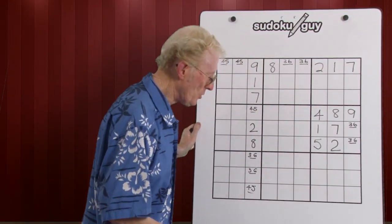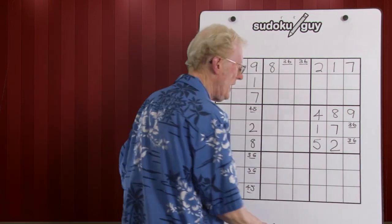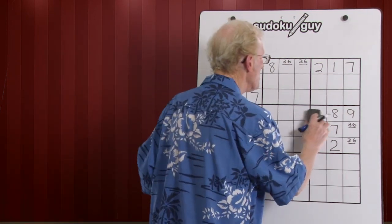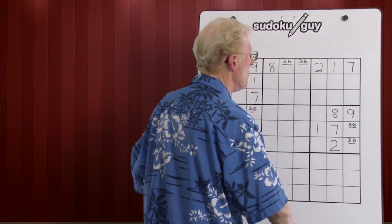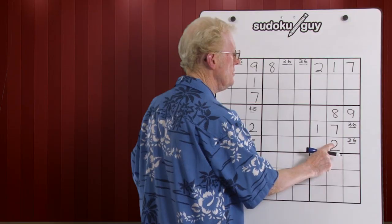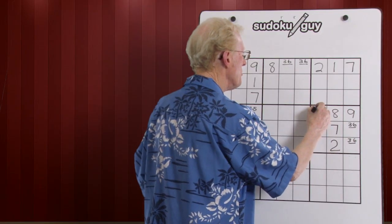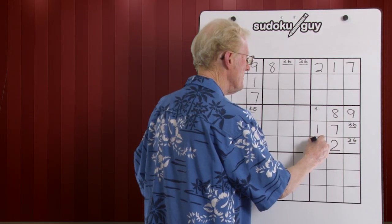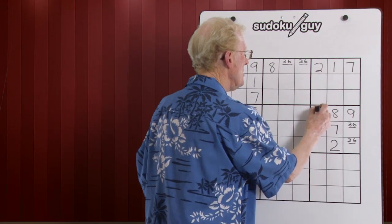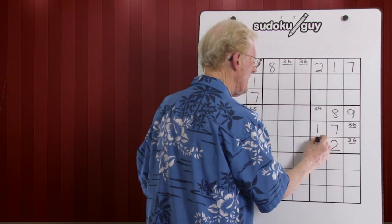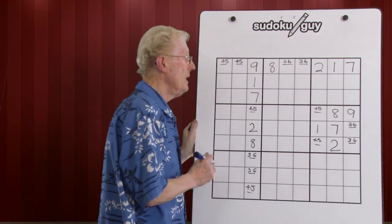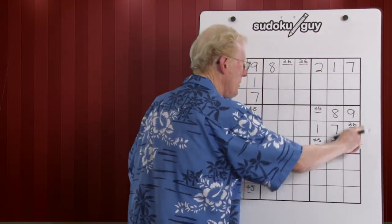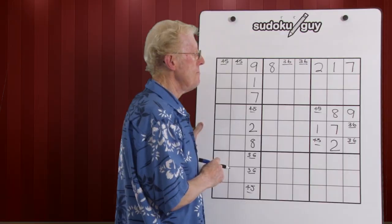And the same principle works over here if you had a situation where there was two numbers missing. Let's take again the four and five. We'll go through one, two, three. Four is missing, so you put a four there and a four there. Five is missing, you put a five there and a five there. Underline it to let you know that there's no other numbers that can go there. Now you've got the whole block with two matching pairs.